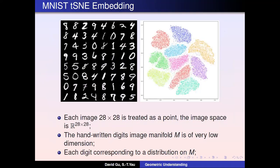Here we show a very simple example using the MNIST dataset. Each image is a 28×28 small image — we treat it as one point. The image space is a Euclidean space of dimension 28×28, which is extremely high. Using manifold embedding techniques like t-SNE, we can embed the handwritten digits to a 2D plane, as shown on the right-hand side. Each point represents one image, and different colors indicate different classes. We can see there are 10 classes. This shows that although the image space is very high-dimensional, the manifold for MNIST data is really low-dimensional — we can use only two dimensions to visualize most of the data points.